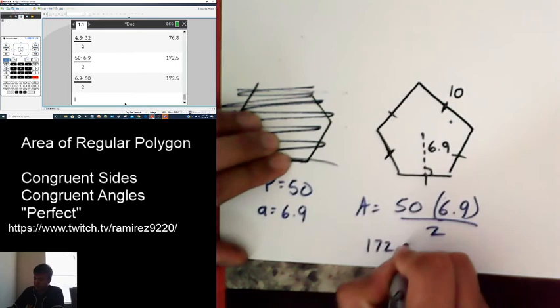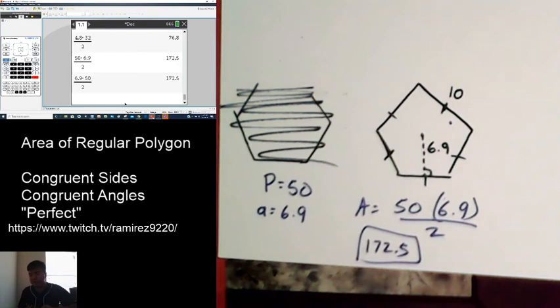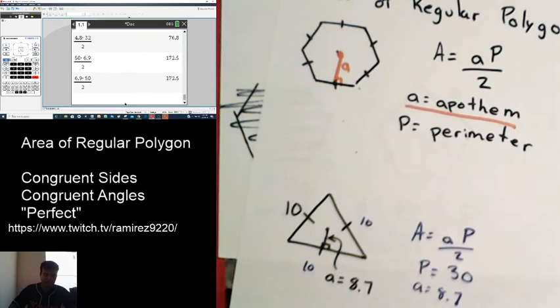So again, area of regular polygons, it's that easy. You know your perimeter, you know your apothem, you're set. So that's it for this part 1. Again, very short, but because it's that easy. Let's stay tuned for part 2.